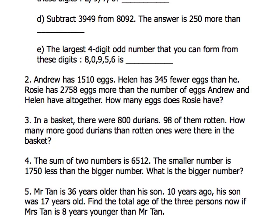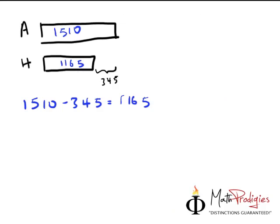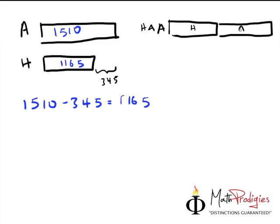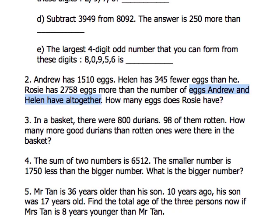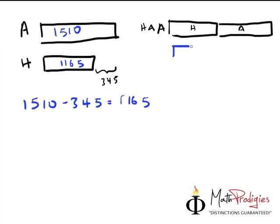The next part says Rosie has 2,758 eggs more than the number of eggs Andrew and Helen have altogether. So let me draw this. If we put Andrew and Helen together — this is Helen and this is Andrew — Rosie has that combined amount plus another 2,758 on top. So this whole thing equals Rosie's total.